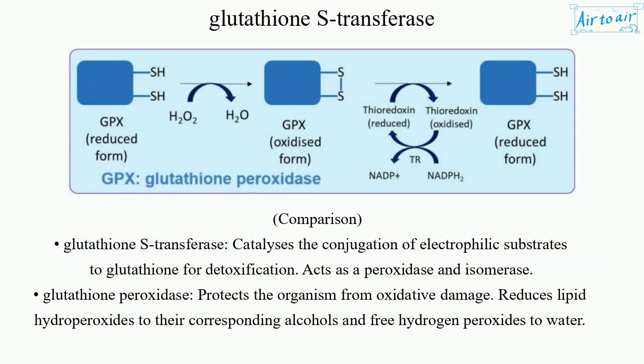Comparison — Glutathione S-transferase: catalyzes the conjugation of electrophilic substrates to glutathione for detoxification; acts as a peroxidase and isomerase. Glutathione peroxidase: protects the organism from oxidative damage; reduces lipid hydroperoxides to their corresponding alcohols and free hydrogen peroxides to water.